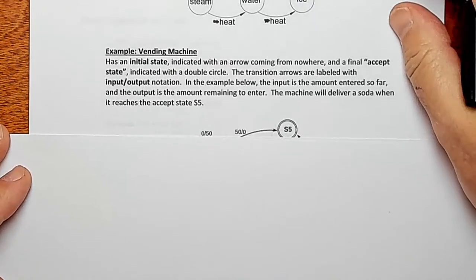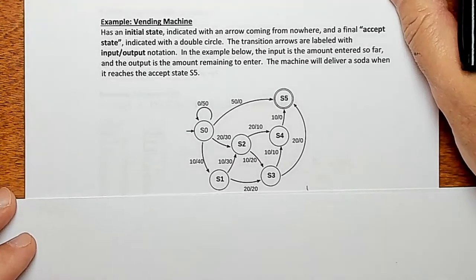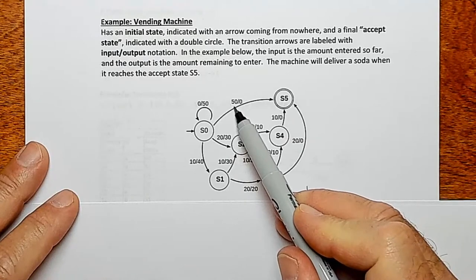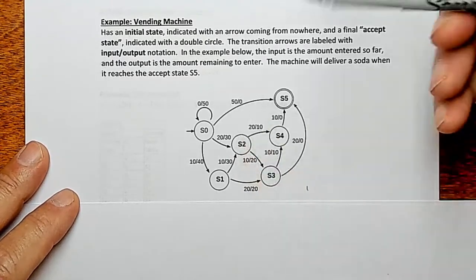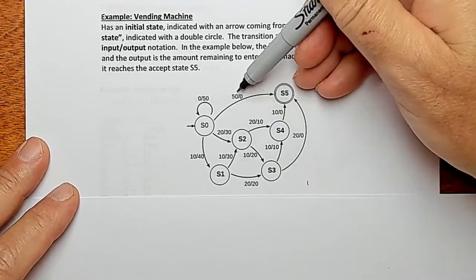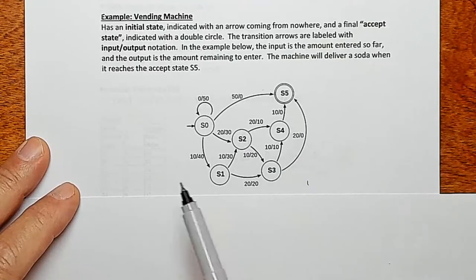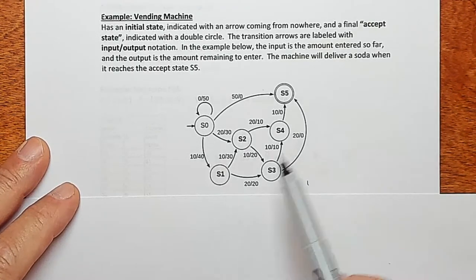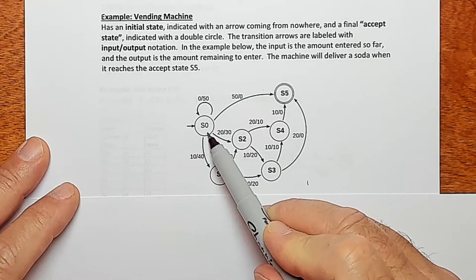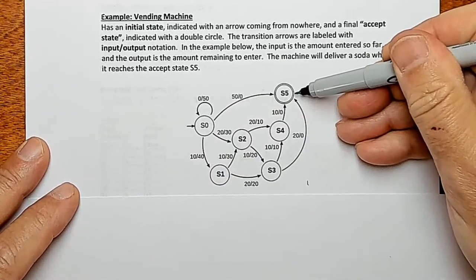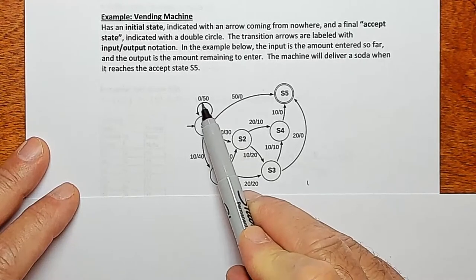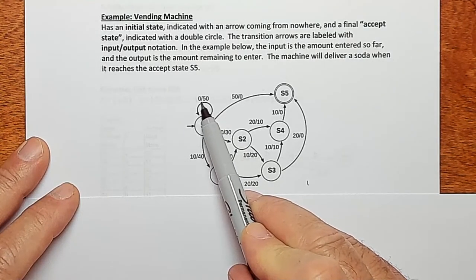Here's another example: a vending machine. This particular vending machine distributes soda and it costs 50 cents. You have these states S0, S1, S2, S3, S4, S5. The initial state is S0 and the final state is S5, indicated by a double circle. You start here and then you have these transitions; the label on the transitions in this notation indicates input slash output. So the input is zero and the output is 50.